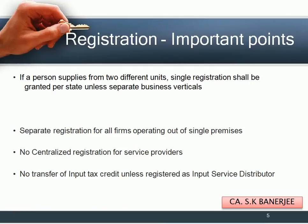If a person supplies from two different units, a single registration shall be granted per state unless there are separate business verticals. Separate registrations are required for all firms operating out of a single premise. There is no centralized registration for service providers under GST — the centralized registration provisions that existed under service tax and excise no longer exist. Input tax credit cannot be transferred unless the entity is registered as an input service distributor, and separate registration for input service distributors is required.